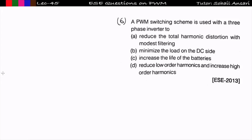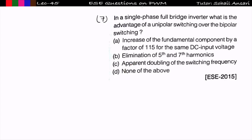The sixth problem: a PWM switching scheme is used in a three-phase inverter. Option A — reduces total harmonic distortion with modest filtering — is correct. Option D — reduces lower order harmonics and increases higher order harmonics — was also asked in the GATE exam and is correct. So option D is the answer.